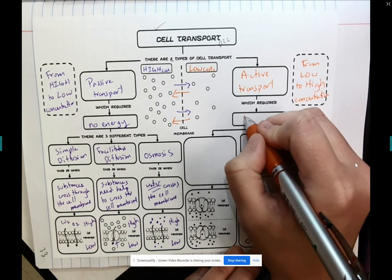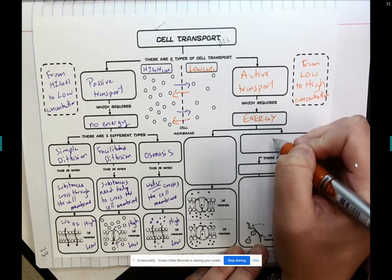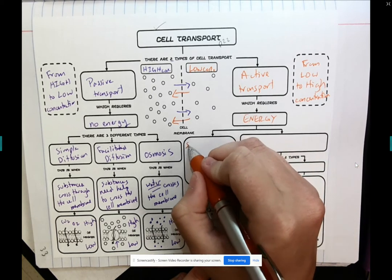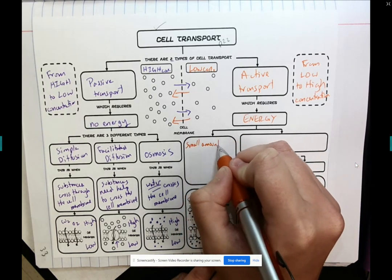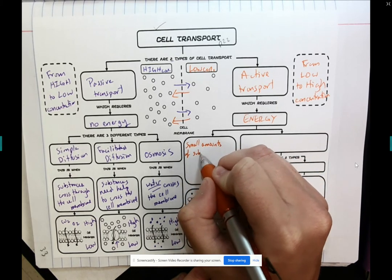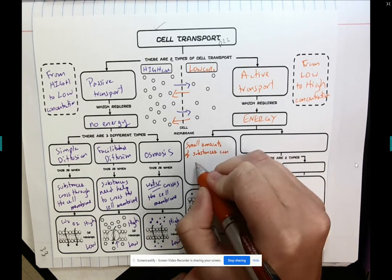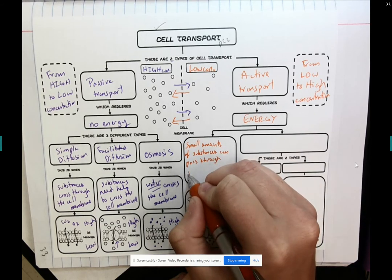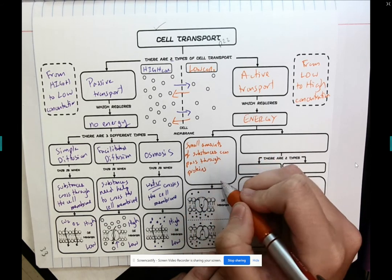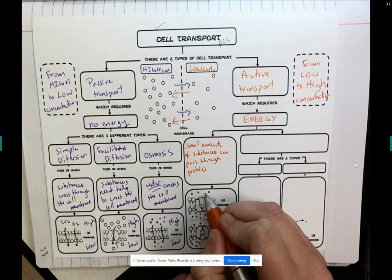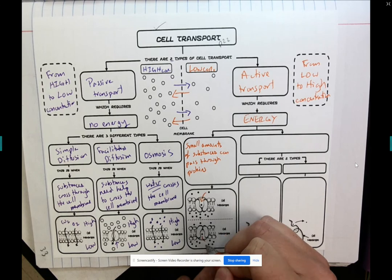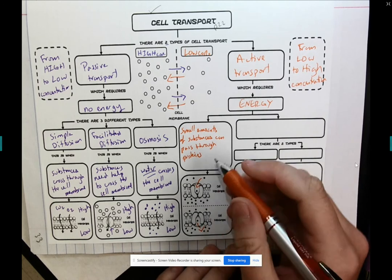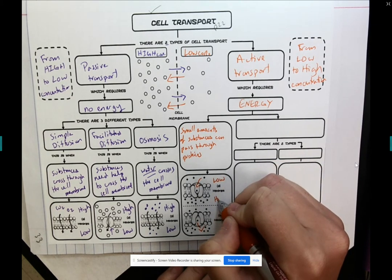Now, this requires energy. One example is when small amounts of substances can pass through proteins. So we can use protein channels to move the substances from an area of low concentration to an area of high concentration. So low to high.